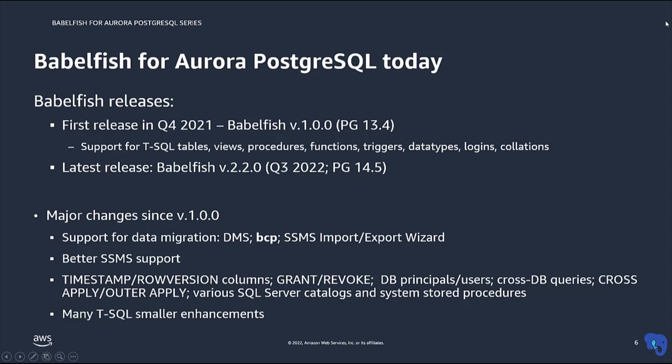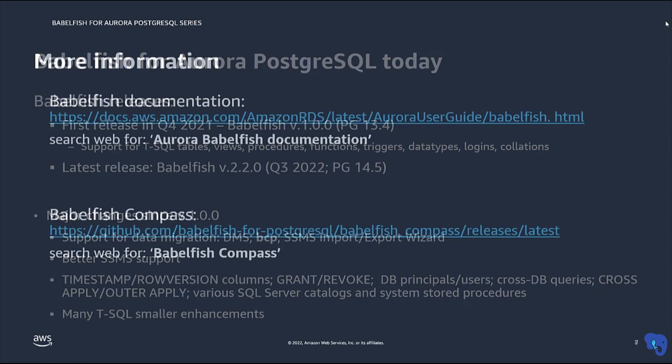For more information about Babelfish, go to the documentation link shown here, but it may be easier to just do a web search for Aurora Babelfish documentation. For the COMPASS tool, which will be discussed in a separate video, just search for Babelfish Compass, and that will take you to the GitHub repository where you can download it.